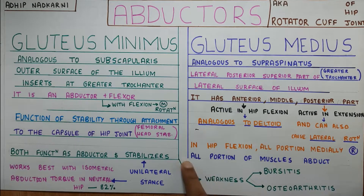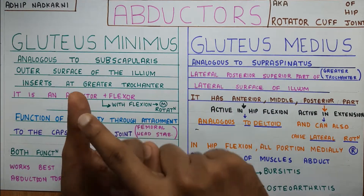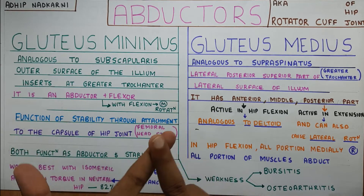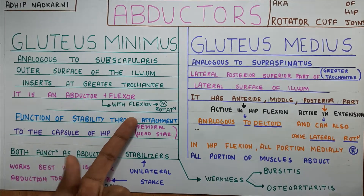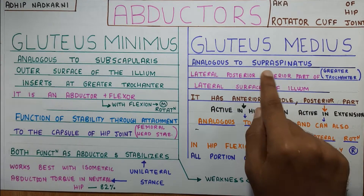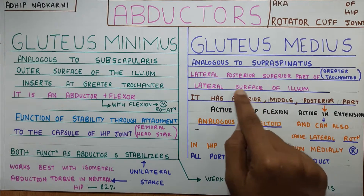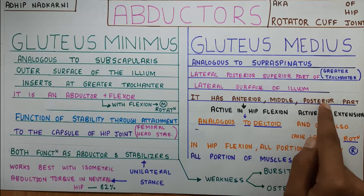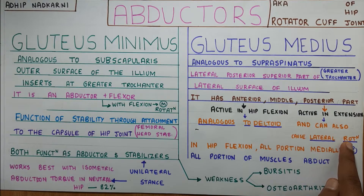To summarize gluteus medius functions: all portions help in abduction. In flexion, all portions help in medial rotation. It is analogous to supraspinatus in its stabilizing function. The three parts mirror the deltoid — the anterior part helps in flexion, the posterior helps in extension and lateral rotation, and together they perform abduction.